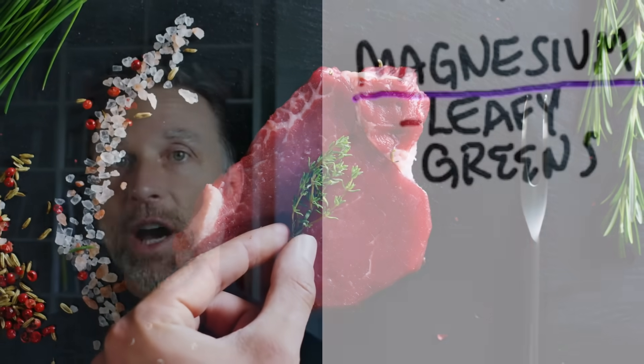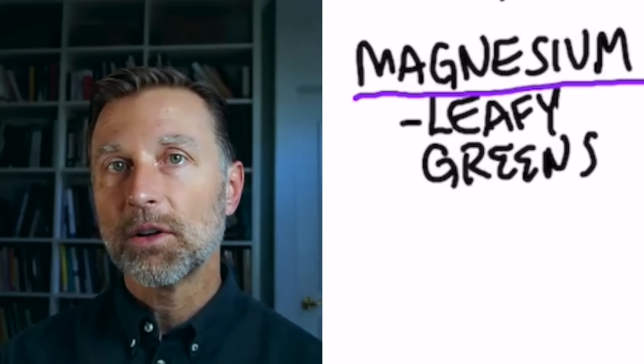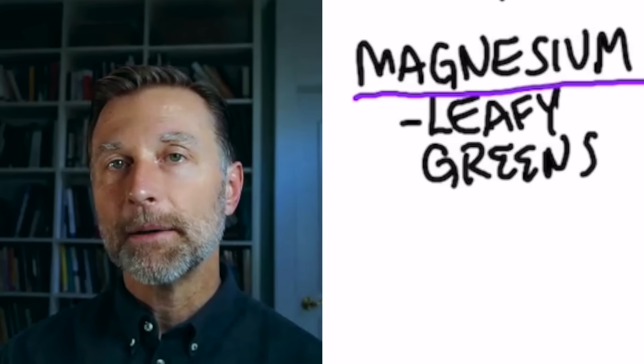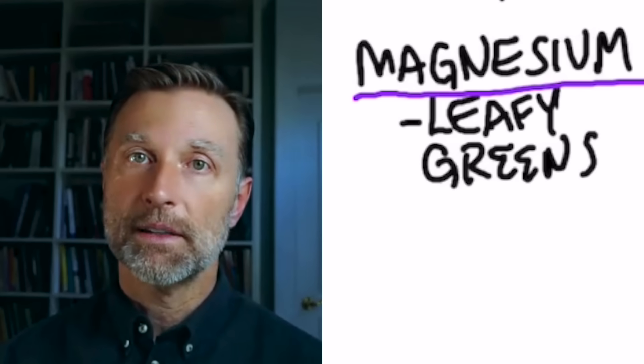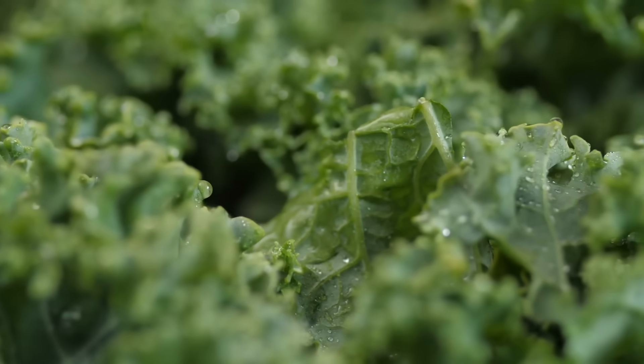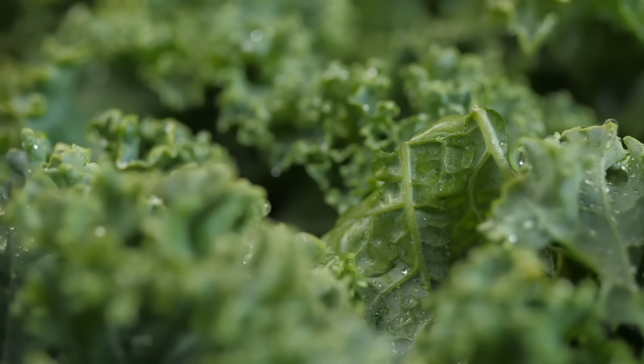Magnesium is another mineral that is needed to make acetylcholine. And you get magnesium when you consume chlorophyll. That's in all the leafy greens. So you can get enough magnesium if you're having salads on a regular basis.